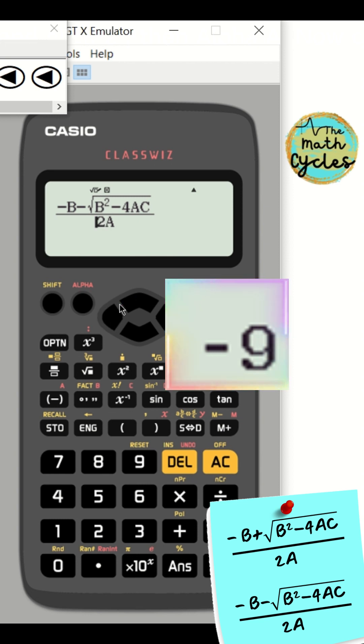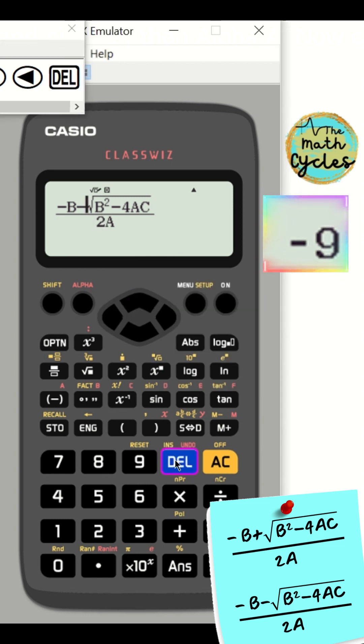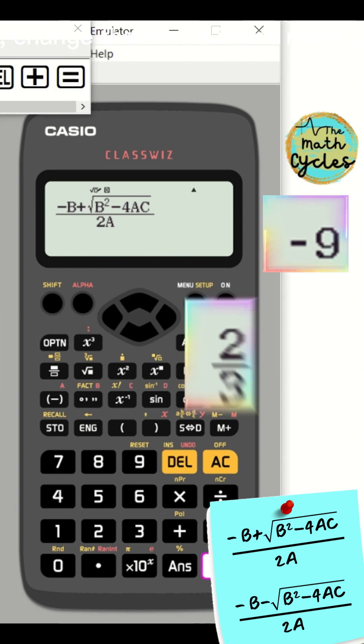For the second root, change the minus in the rule to plus, then press equals key. Done.